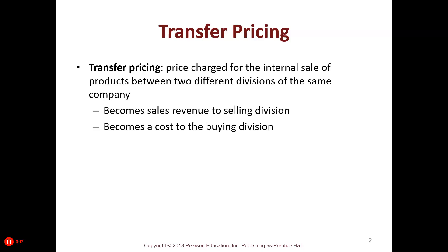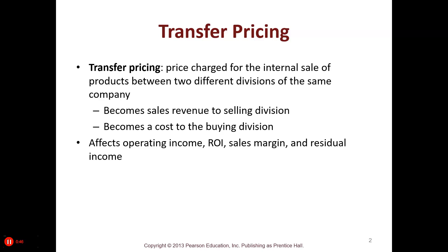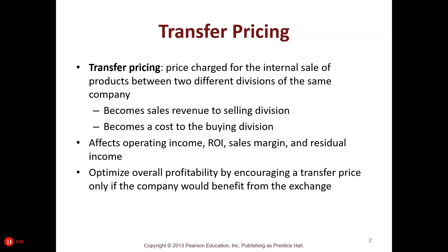Transfer pricing occurs when within a company two divisions want to interact with each other — for example, the truck division and the tire division. The truck would like to have tires from the tire division, so how do they determine what to sell and how to cost that? It's when products go between two divisions in the same company, and it affects operating income, return on investment, sales margin, and residual income. The goal is to optimize overall profitability by encouraging a transfer price only if the company would benefit from the exchange.